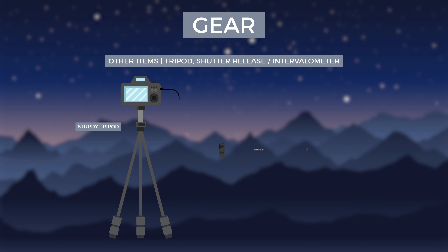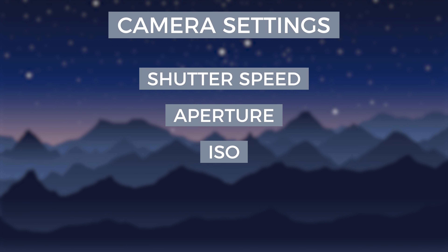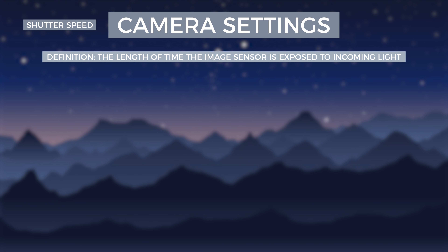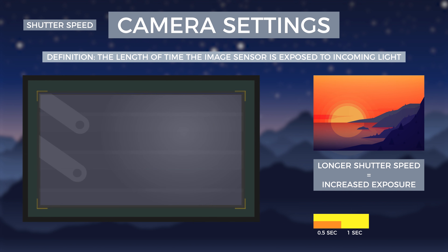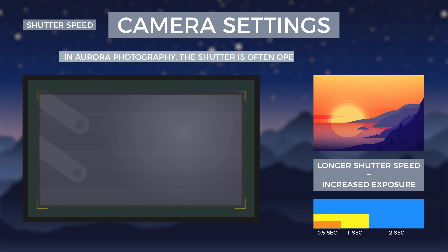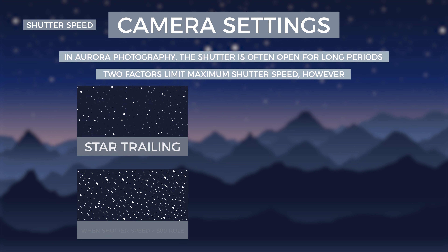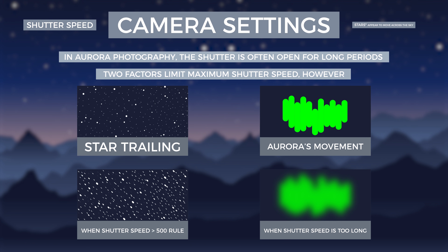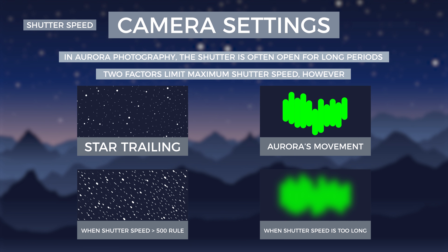For aurora photography, dialing in the correct camera settings can be tricky. Using a camera on manual setting means you have control of three parameters: shutter speed, aperture, and ISO. Shutter speed is the length of time the camera sensor is exposed to incoming light — longer shutter speeds increase the exposure of the image. Since aurora is very faint, the shutter must be kept open for a long time, sometimes as long as 30 seconds. However, two factors limit how long we can open the shutter: the movement of the sky and the aurora itself. Since the Earth rotates, our stationary position makes the sky appear to move, and this movement can be detected when using long shutter speeds, causing round stars to deform into unpleasant streaks.